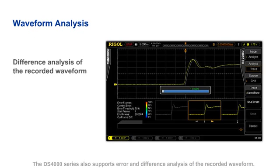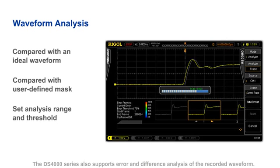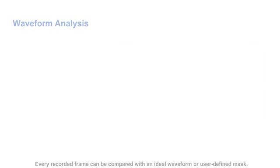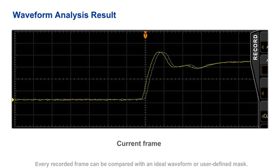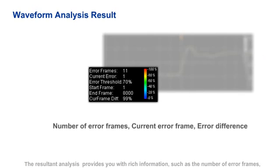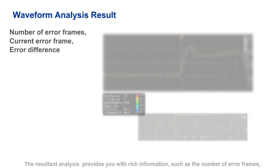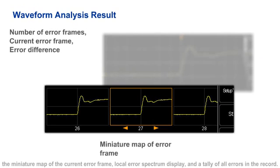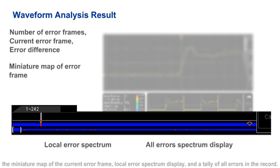The DS4000 series also supports error and difference analysis of the recorded waveforms. Every recorded frame can be compared with an ideal waveform or user-defined mask. The resultant analysis provides you with rich information such as the number of error frames, a miniature map of the current error frame, local error spectrum display, and a tally of all the errors in the record.